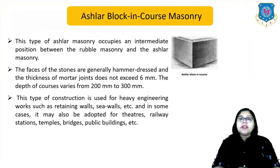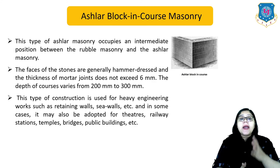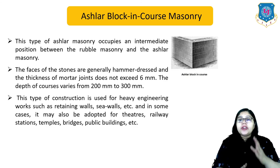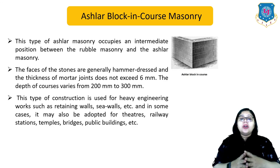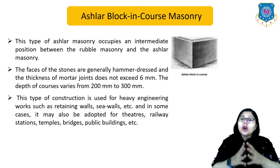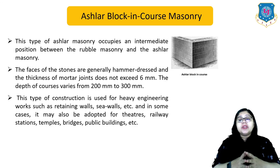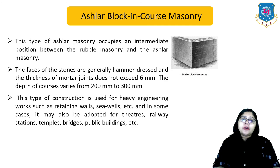The last type is ashlar block-in-course masonry. This type occupies an intermediate position between rubble masonry and ashlar masonry. The faces of stones are generally hammer-dressed and the thickness of mortar joints does not exceed 6 mm. The depth of courses varies from 200 to 300 mm. This type is used for heavy engineering work such as retaining walls, sea walls, and in some cases may also be adopted for theatres, railway stations, temples, bridges and public buildings.